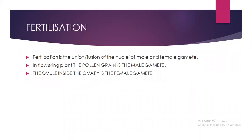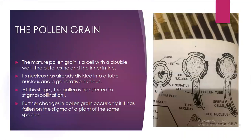Fertilization is the union or fusion of the nuclei of male and female gametes. In flowering plants, the pollen grain is the male gamete and inside the ovule in the ovary is the female gamete. The mature pollen grain is a cell with a double wall — outer exine and inner intine. Its nucleus has already divided into a tube nucleus and a generative nucleus. At this stage the pollen is transferred to the stigma. Further changes occur only if it has fallen on the stigma of the same species.